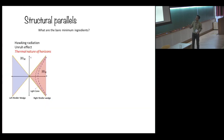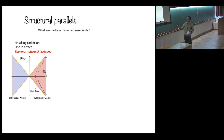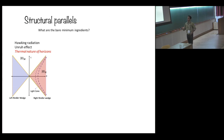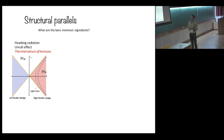We're going to ask: what are the bare minimum ingredients necessary to understand the problem of Hawking radiation and the Unruh effect? Black holes are in the news a lot — there are quantum fluctuations near the black hole horizon which lead to thermal radiation, and the associated Unruh effect in which uniformly accelerating observers perceive a thermal bath. I would like to broadly characterize these things as the thermal nature of space-time horizons.